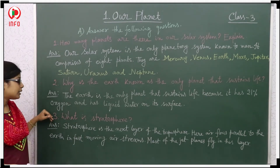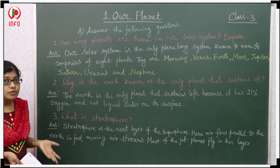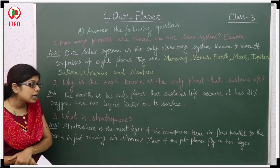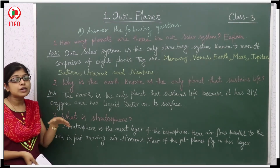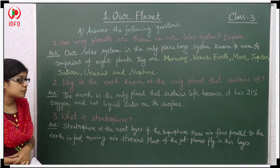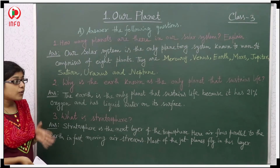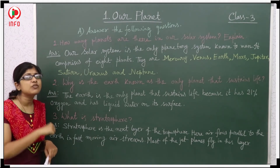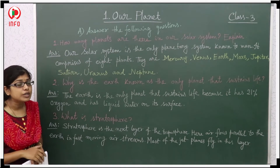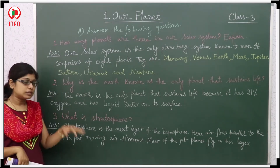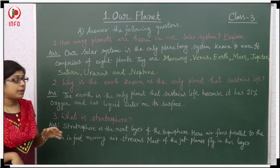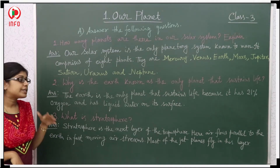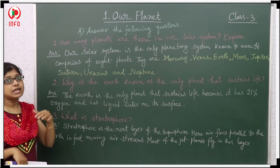Third question: What is the stratosphere? The stratosphere is the next layer above the troposphere. Here, air flows parallel to the Earth in fast-moving streams, meaning horizontally. Most jet planes fly in this layer.